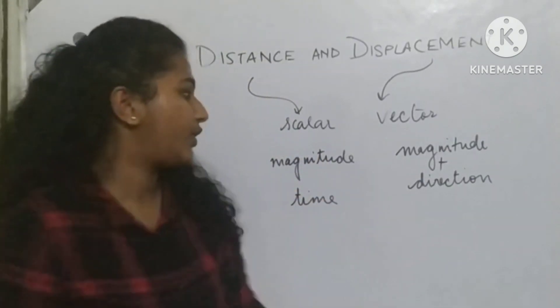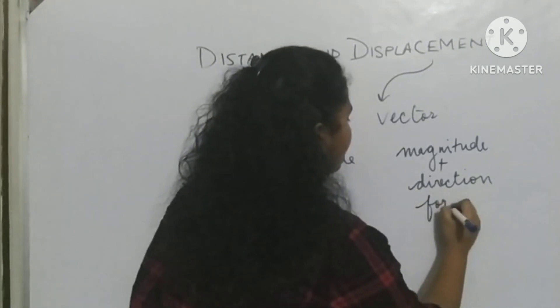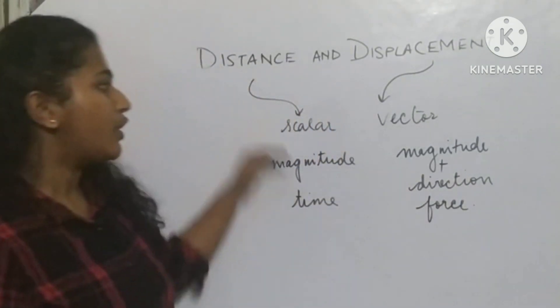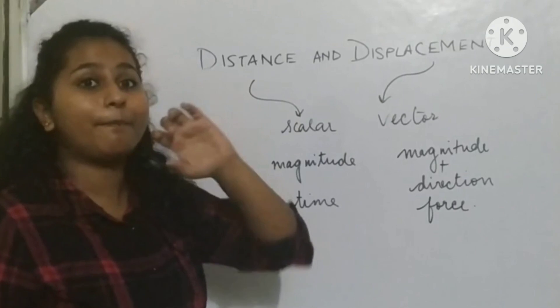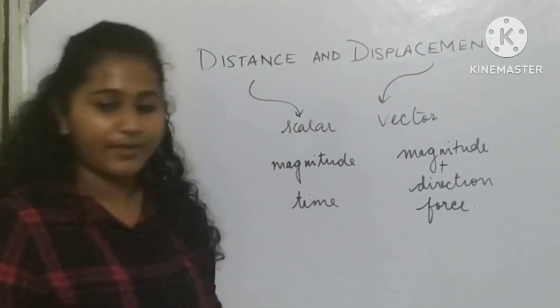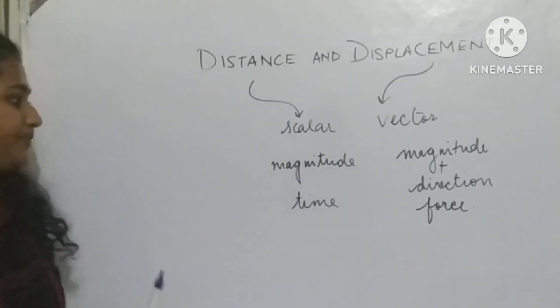So the best example of a vector quantity is force. That was the major, or basic, difference between distance and displacement. Now let's take an example.